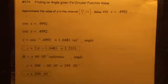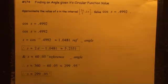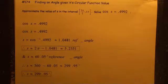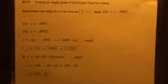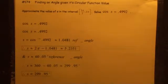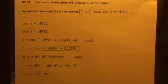Video number 174: finding an angle given its circular function value. Approximate the value of S in the interval 3π/2 to 2π. Solve cosine S equals 0.4992.